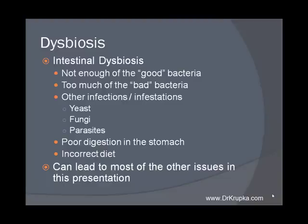Poor digestion in the stomach can lead to dysbiosis. If you don't digest your food well in the stomach, it doesn't come out as processed as it should, and that can change the environment farther down in the digestive tract. Having the incorrect diet — not putting the right food in to feed the bacteria in the digestive tract — also contributes. If you have dysbiosis, it can lead to most of the other issues we're going to talk about in the rest of this presentation, so it's very critical.